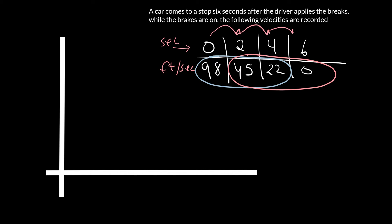But let's see how we could actually draw this to, again, see what you're actually doing. So if I make this my second axis, and this my feet per second axis, then at zero, I'm like somewhere up here at 98. So we'll put a point there.